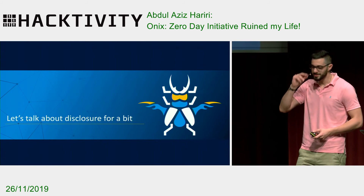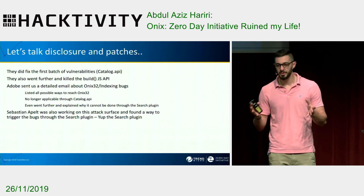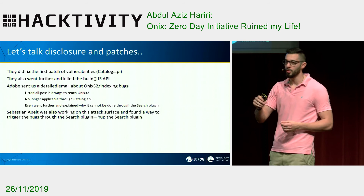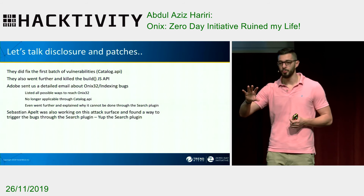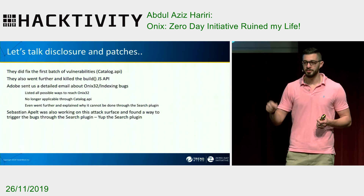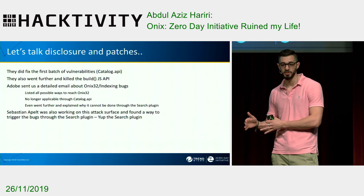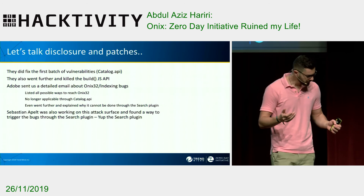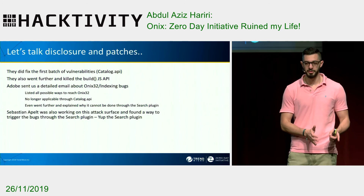Let's talk about disclosure. When I found all the Catalog vulnerabilities, I also found two bugs in the core Onyx API through fuzzing: a heap overflow and a use-after-free. We sent all the vulnerabilities to Adobe at once. They managed to patch all the Catalog vulnerabilities and got back to us saying they also patched the Onyx heap overflow, but they could not trigger the use-after-free. What they did was disable the build API I was using to trigger the parsing, but they did not actually patch the Onyx32.dll vulnerability — because they don't really own that code.